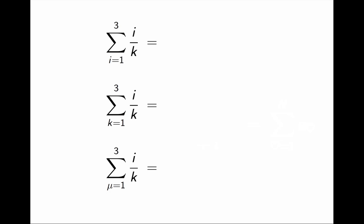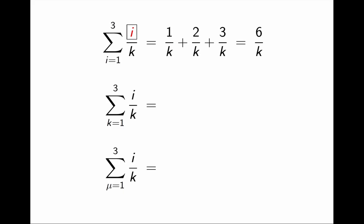Let's do this. In the first sum, the summation index is i. i is what changes from term to term. For the purpose of the sum, k is just a constant. So the sum is 1 over k, plus 2 over k, plus 3 over k, or simply 6 over k.